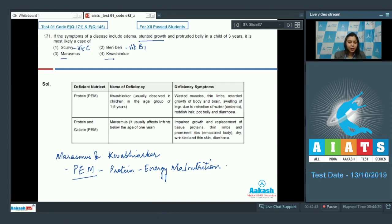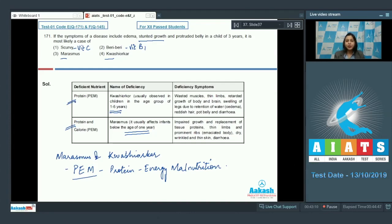So we look at marasmus and kwashiorkor. There is a table differentiating kwashiorkor from marasmus: kwashiorkor usually occurs in the age group of one to five years, whereas marasmus occurs usually under one year of age. In marasmus there is deficiency of proteins and overall energy, whereas in kwashiorkor there is deficiency of only proteins but no deficiency of overall calories or energy.